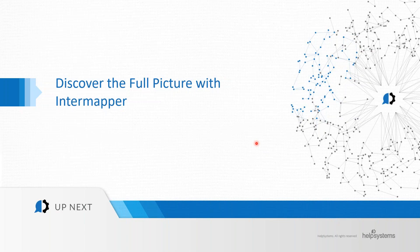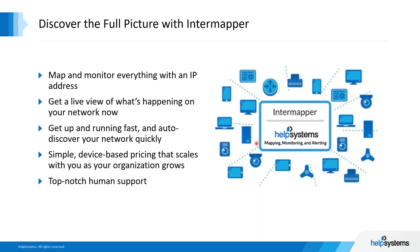Let's take a look at HelpSystems' Intermapper solution. Intermapper gives a full picture of your network. One thing we pride ourselves on is providing a mapping front end to give you the network visibility you're looking for. We can monitor pretty much anything with an IP address — not just standard network components but also non-standard ones like HVAC systems, environmental sensors, door sensors, IP cameras, and security systems.